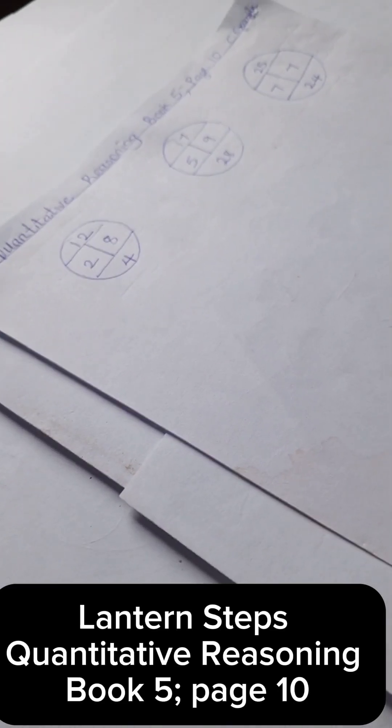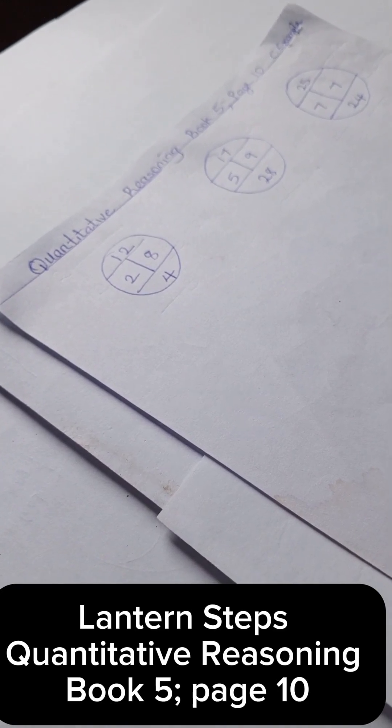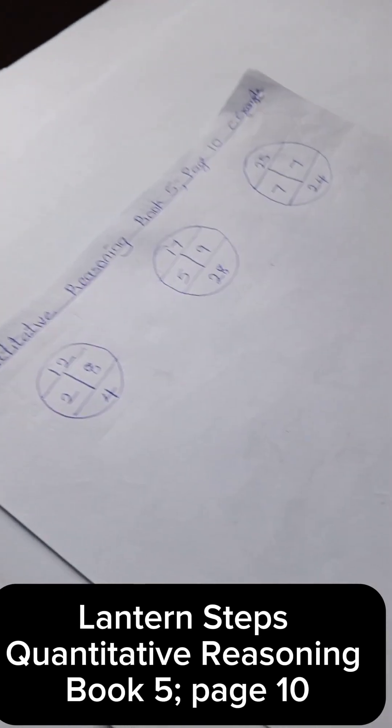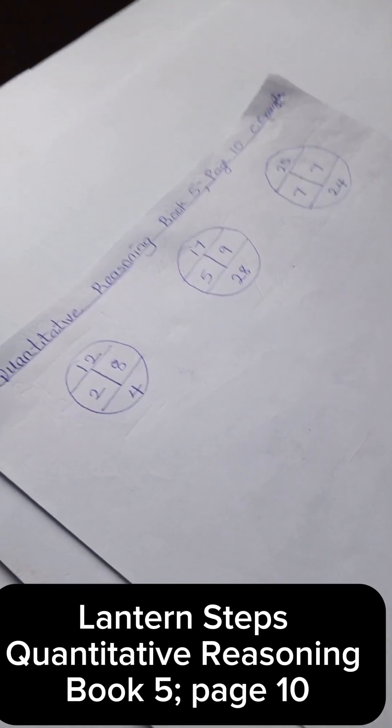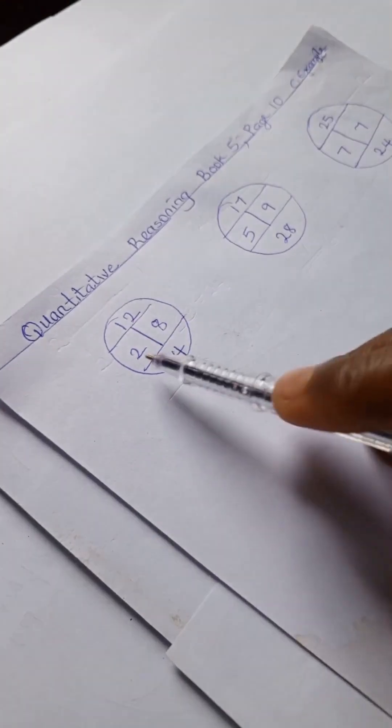Welcome to quantitative reasoning solutions. We have quantitative reasoning from Lantern Steps Book 5, page 10. Thank you for joining in today. This is exercise example C, so we have 12, 2, 8, 4.